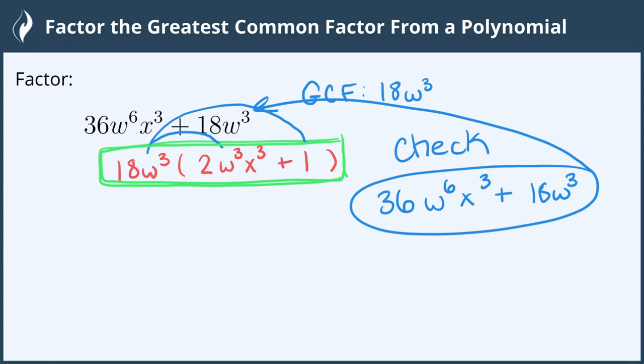And in this case, since we are left with a 1, we do know that we took out the very largest amount from both of them, and we're all done.